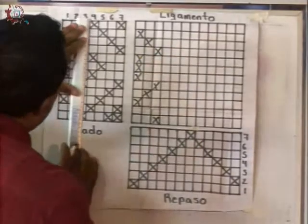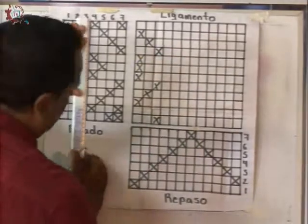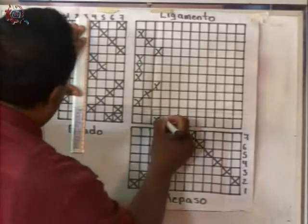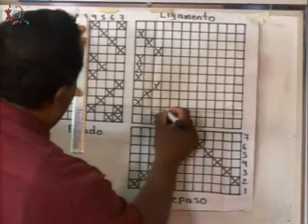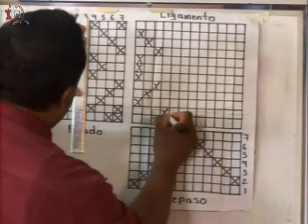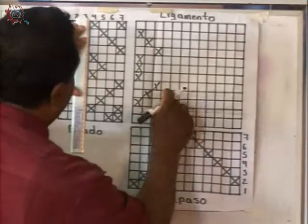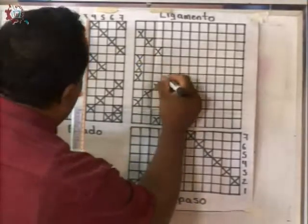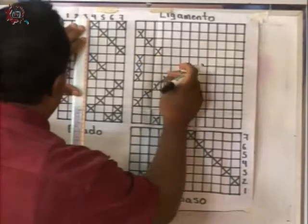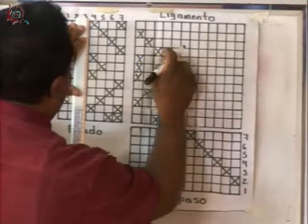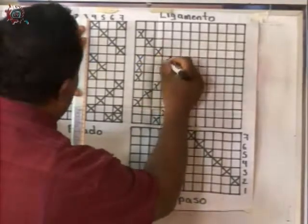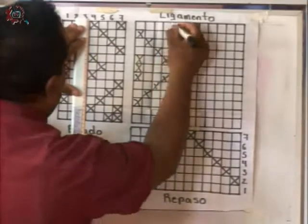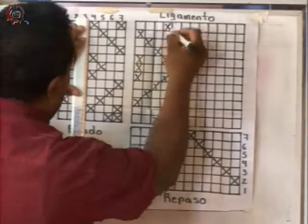Después voy con el cuatro: dejo uno, tomo uno, dejo tres, tomo uno, dejo uno, tomo uno, dejo tres, tomo uno.